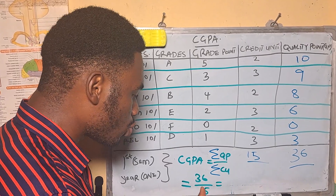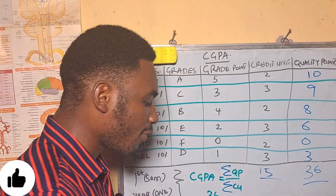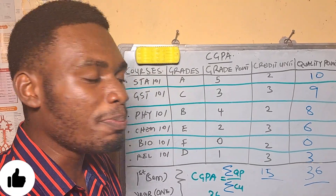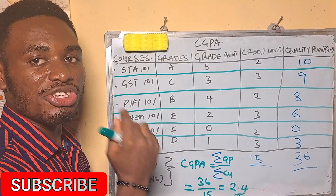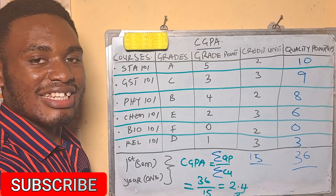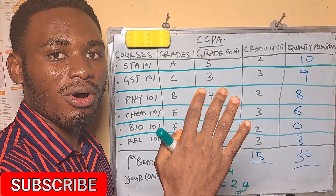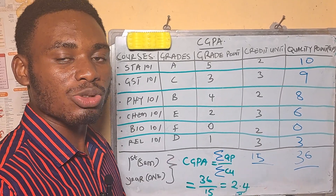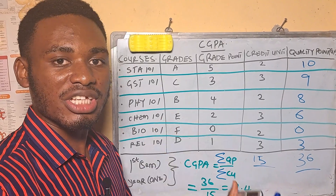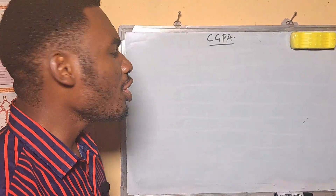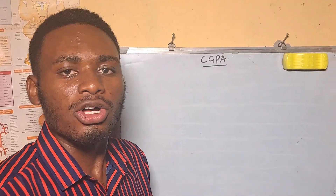Our answer is 2.4, so 2.4 is your CGPA for first semester in year one. This is a practical example because it's going to help us calculate for other years and to get your cumulative CGPA for your whole stay in the university.